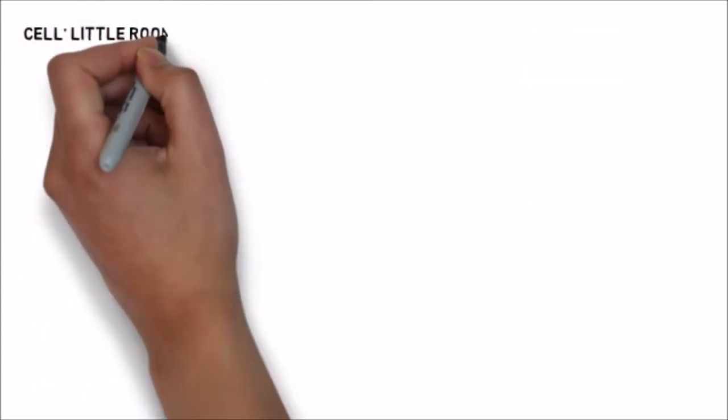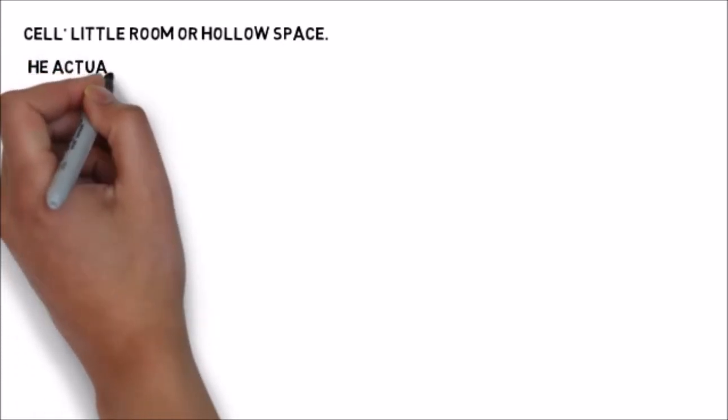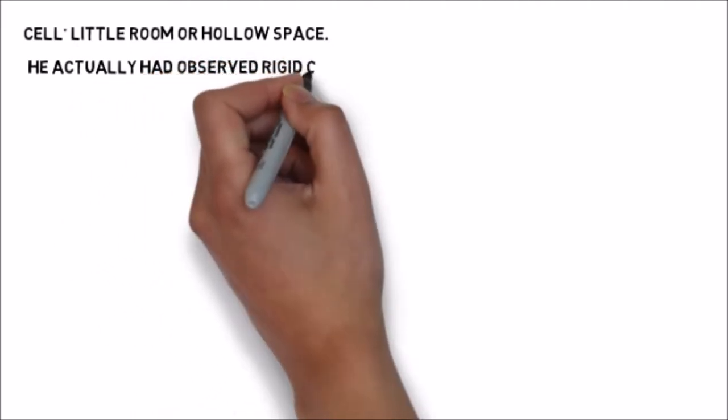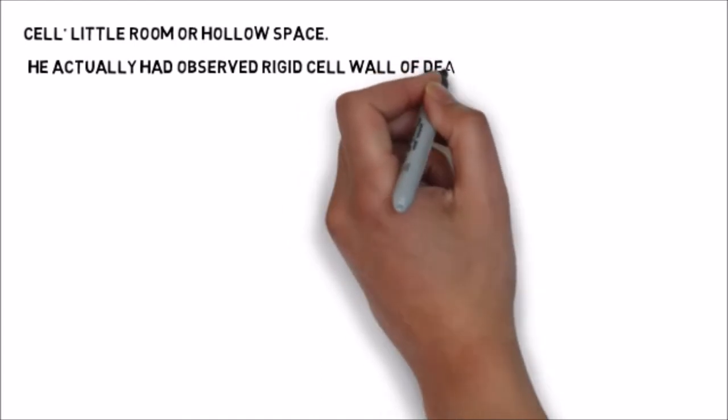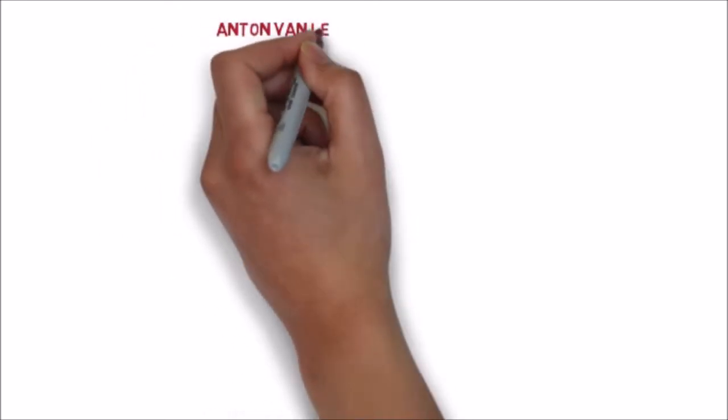Cell is a Latin word which means hollow space or little room. When Robert Hooke saw the honeycomb-like structure, what he had actually observed was the rigid cell wall of dead cells. Because bark cells only have a cell wall since they are dead cells. So he thought that the cell is hollow inside.